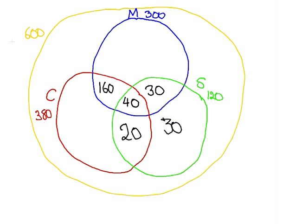We have also accounted for 230 students who are studying Mathematics courses: 160 plus 40 plus 30. That means there are 70 students taking Mathematics courses only, not Computing or Statistics. And lastly, we have accounted for 220 Computing students who are also taking Maths or Statistics or both, meaning there are 160 students taking Computing classes only, not Mathematics or Statistics.